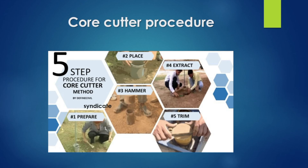We also use the sand replacement method. That gives the exact field density value. Highways research institutes use both the sand replacement method and the core cutting method to find dry density.